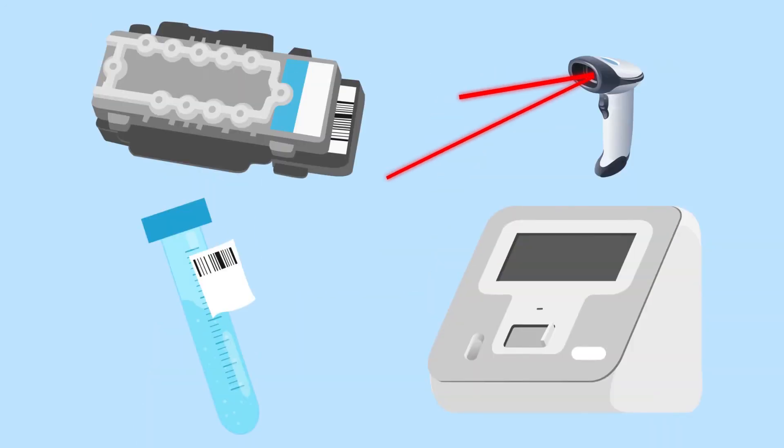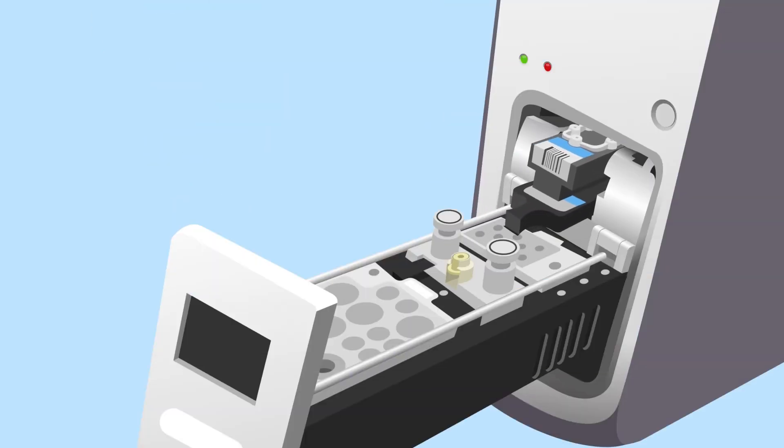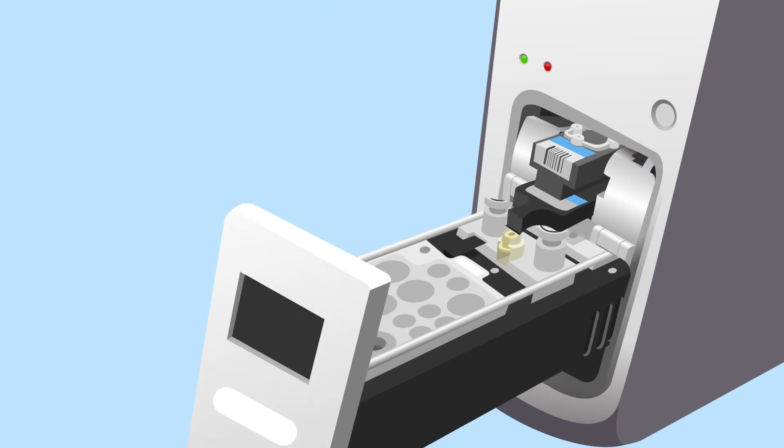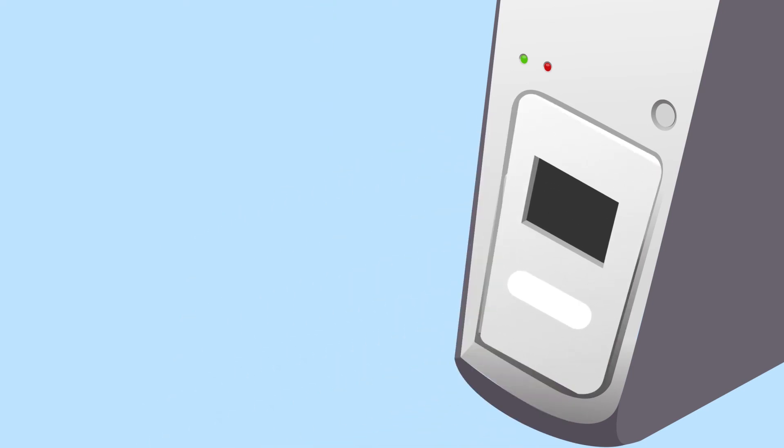Then use the Verigene Reader and barcode scanner to match a test cartridge with a sample ID. Finally, load the test cartridge and sample, then close the drawer to begin automated test processing, which takes about two hours.